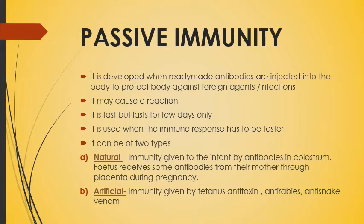Passive immunity provides ready-made antibodies for immediate response, but it lasts only a few days. Whereas active immunity is the production of antibodies by the body itself — it is slow but lasts long. This is the major difference between active immunity and passive immunity.